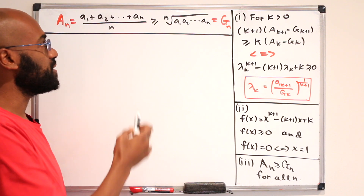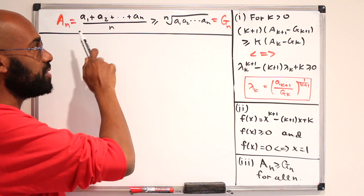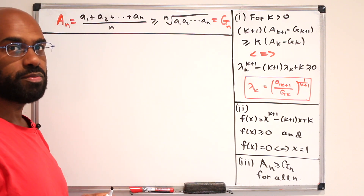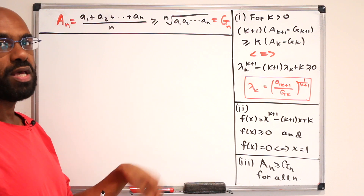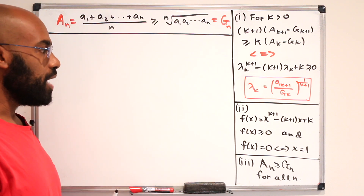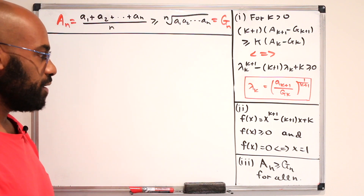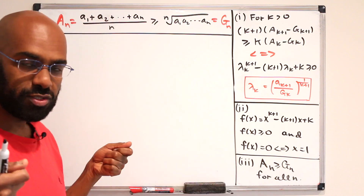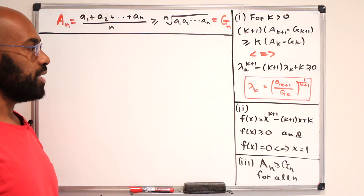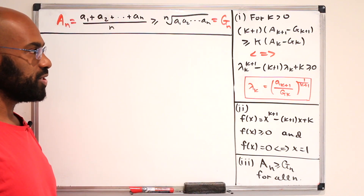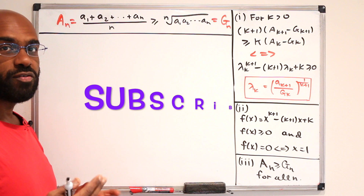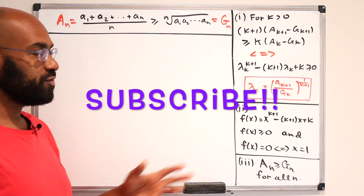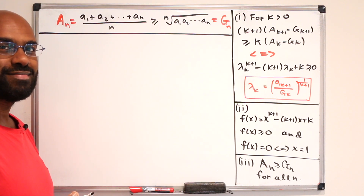It'll be beneficial to think of our sequence as an infinite one consisting of positive numbers a1, a2, a3, and so on, and to think about the arithmetic mean and geometric means as two sequences of numbers indexed by the natural numbers n. If you want to pause the video and give this a try, go ahead, and then we'll discuss the solution.